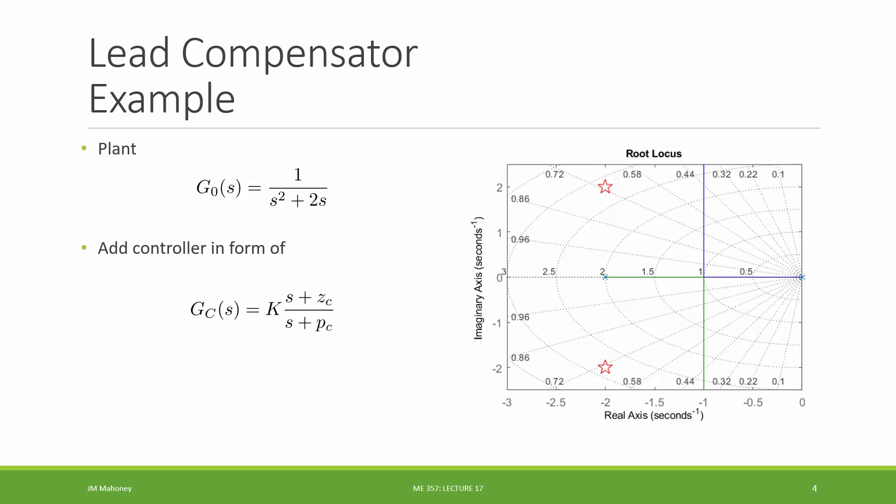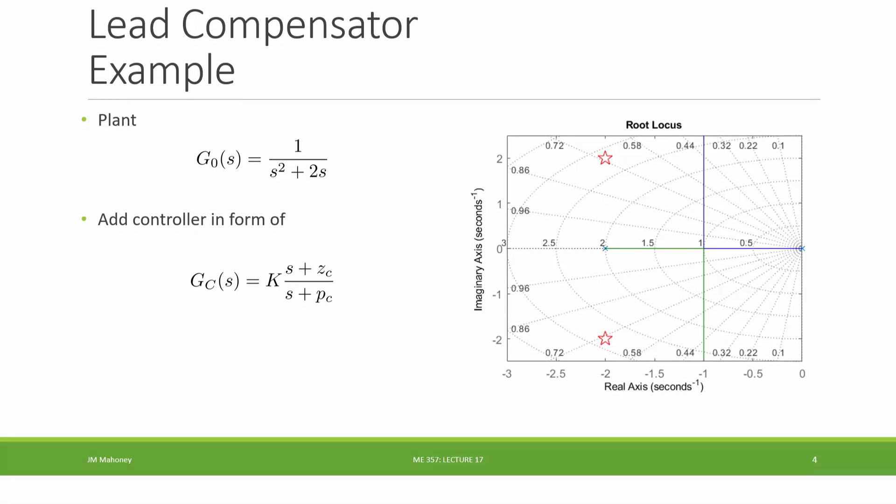But this time, we're going to do it with the lead compensator or, in general, a compensator in the form of this k times s plus zc over s plus pc. And we're going to continue in our desire from the previous lecture with the PD controller. We want our dominant poles of the closed loop system to be located at negative 2 plus or minus 2j. So let's see how we get to this desired pole location.